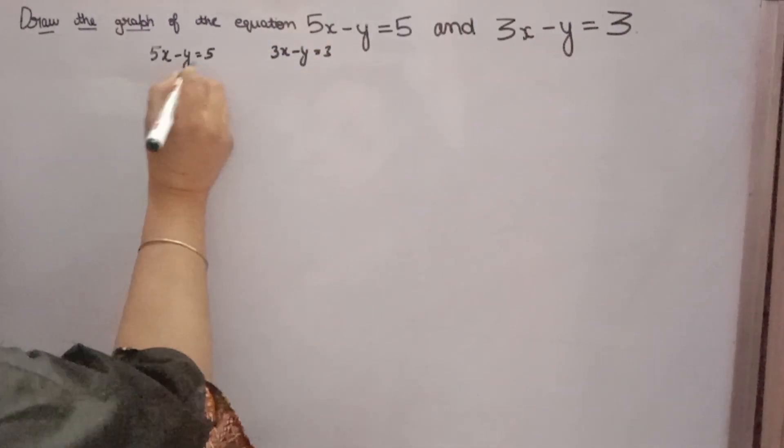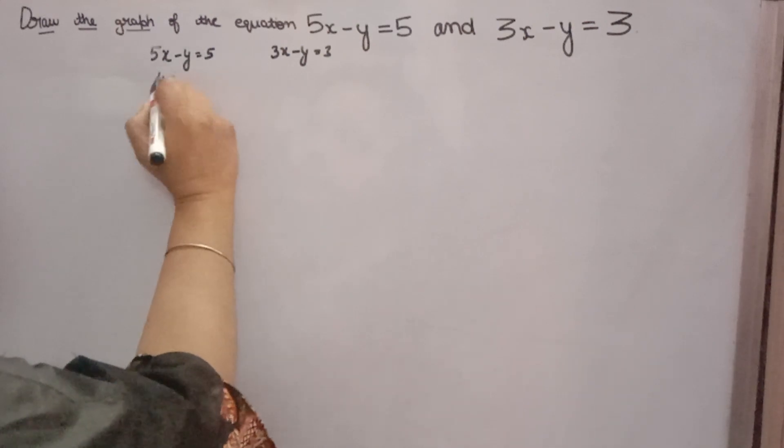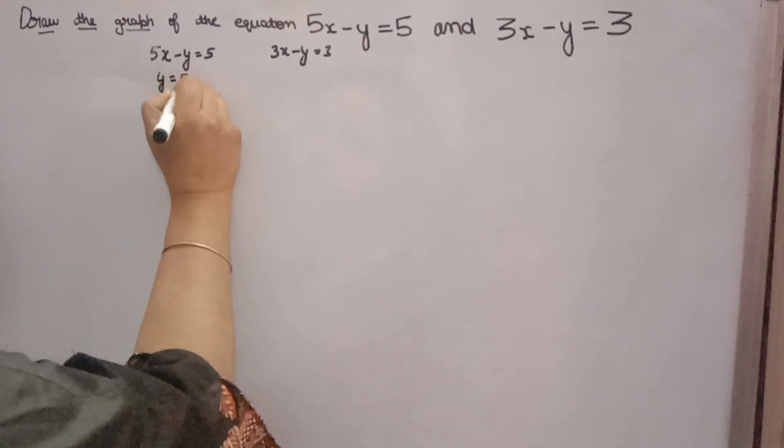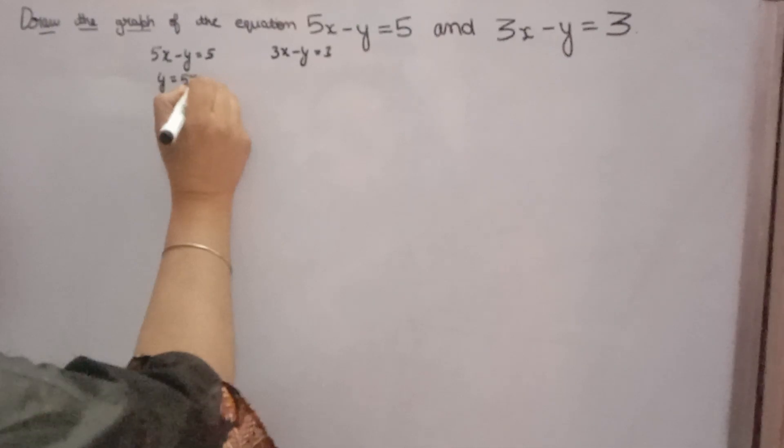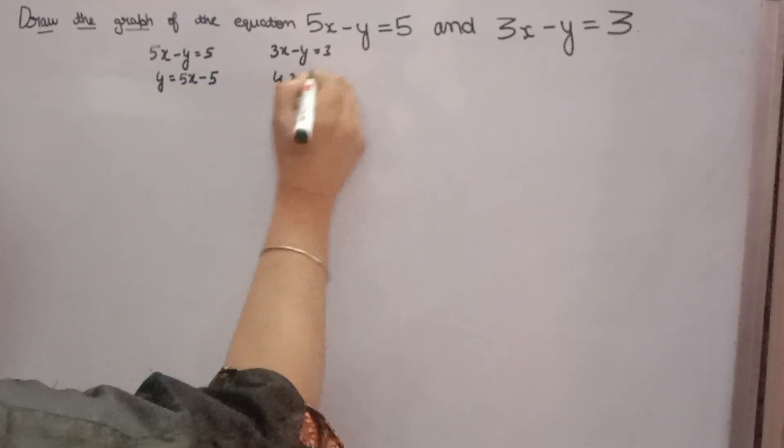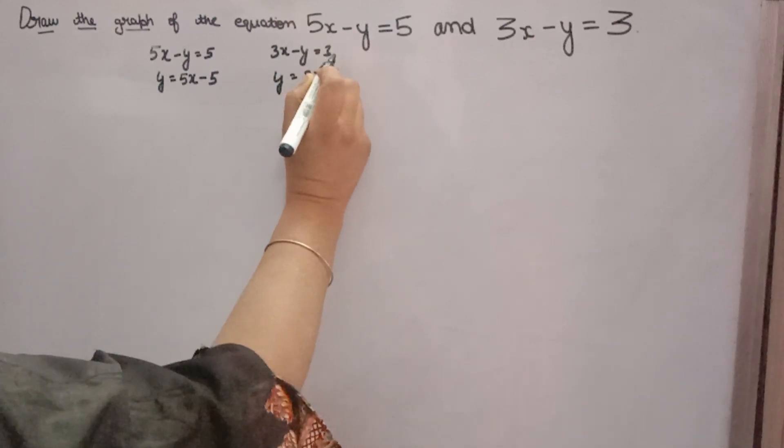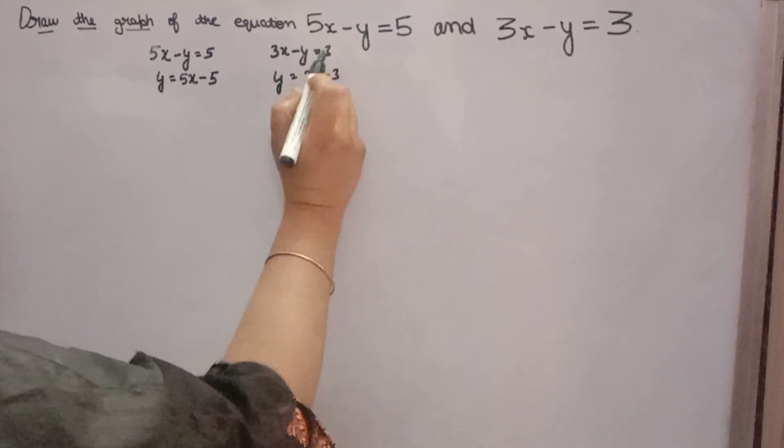Now write y in terms of x. Minus y will go to that side, it will become plus y. 5x will remain as it is, 5 will come here, it will become minus 5. Here also y will come, 3x minus 3, because minus y you will take that side it will become plus y, and 3 you will bring this side, so 3x minus 3.